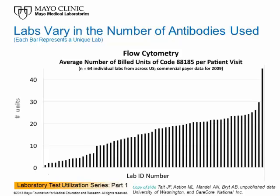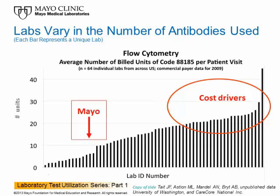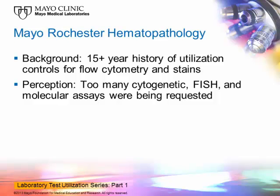This slide was shared with me by Dr. Mike Astian and colleagues from the University of Washington and Seattle Children's Hospital, and data acquired in working with CareCorps National. This slide shows how different clinical laboratories bill for the CPT code 88185, which corresponds to the number of antibodies used in a flow cytometry study. There is a huge range in the number of antibodies used by flow cytometry laboratories. The cost drivers are obviously at the right-hand side of the graph, and are the source of what really adds to the overall cost of flow cytometry in this country. We have been using this approach for approximately 17 years now, and clearly it has worked well within our large and varied clinical practice. We have had a long history of utilization control for flow cytometry and immunohistochemical and cytochemical stains in our hematopathology practice here at Mayo.